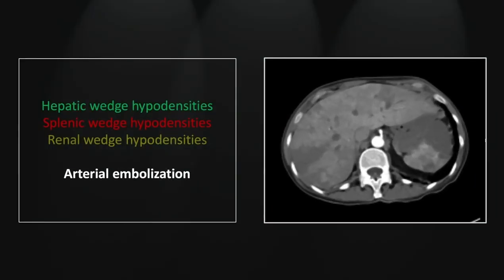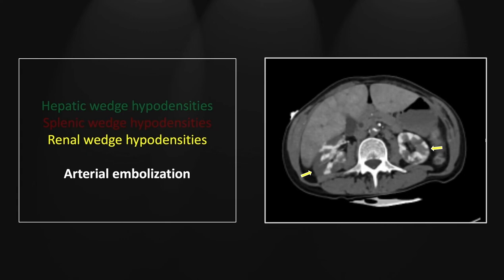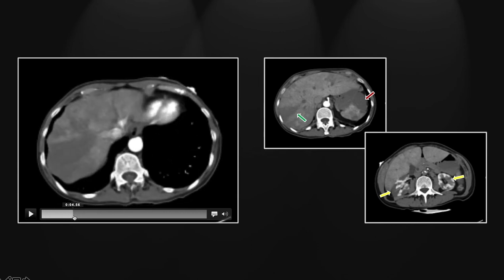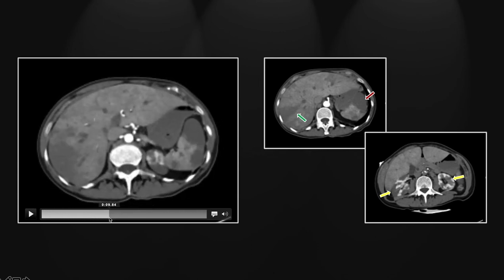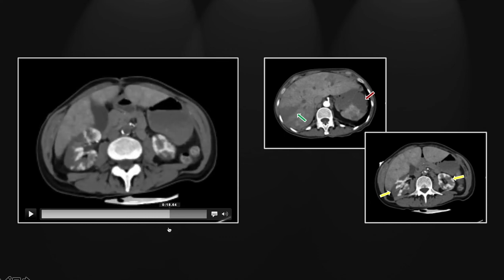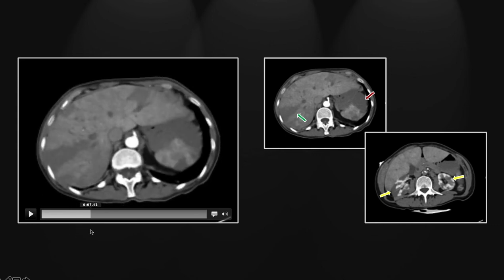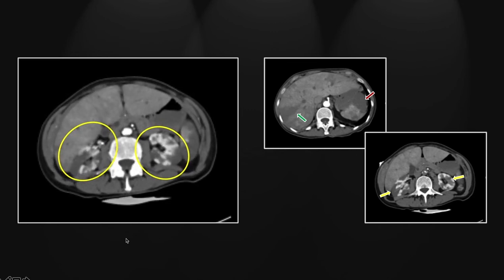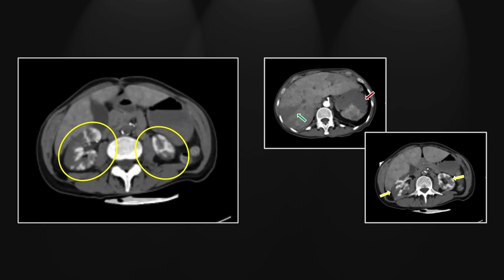Our next case is an extensive arterial embolization involving all of the parenchymal organs. The liver and the spleen both show wedge-shaped hypodensities that are very well circumscribed and typical in appearance for infarcts. Look at the kidneys — they have extensive wedge-shaped hypodensities, very well circumscribed, and consistent with an embolic shower. Let's first appreciate the extensive hepatic infarcts. Note also the anterior spleen, clearly infarcted. The kidneys show multifocal wedge-shaped cortical hypodensities, clearly denoting an embolic shower.